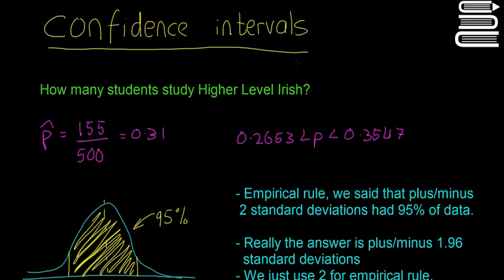Alright, so now in this video we're going to look at confidence intervals again, which is going to be a little bit more exact and correct. We're going to use the same example, how many students study higher level Irish. We already have our sample proportion which is 0.31 and we have our basic confidence interval here that we calculated in the last one using the margin of error.